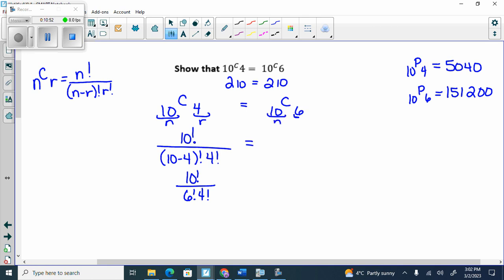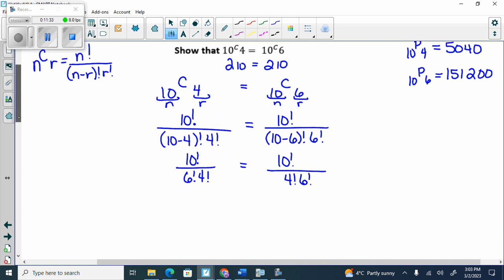Then I'm going to do 10C6 and see why the heck they're the same. So now this is my n and this is my r. So I'm going to get 10 factorial over (10-6) factorial, 6 factorial. So then I get 10 factorial over 10 minus 6, which is 4 factorial, 6 factorial. Does 6 factorial times 4 factorial make a difference compared to 4 factorial times 6 factorial? No. They're the same thing. It only works with C's because C has that extra r factorial on the bottom.